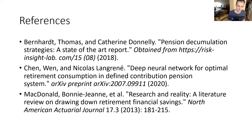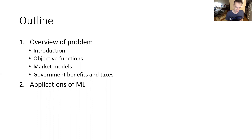The talk is based on these three papers. The first and last are finance papers which survey the pension decumulation problem and its formulation. The second is an applied machine learning paper which uses neural network techniques to attempt to solve the problem. The majority of the talk will cover a general overview of the problem, followed by a discussion of applying machine learning techniques to this problem.